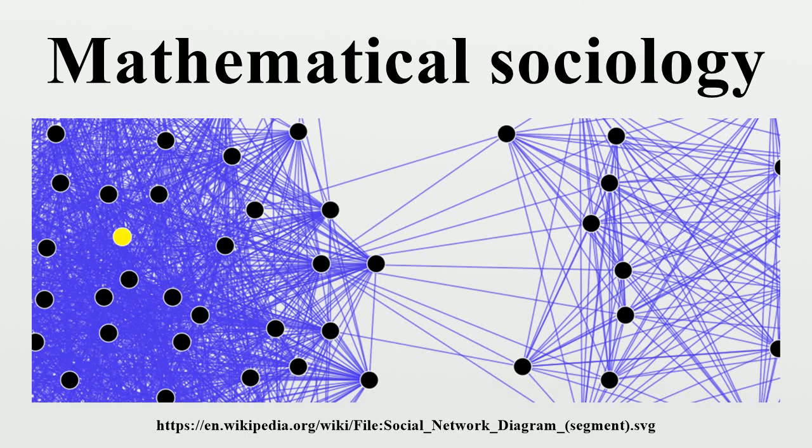Mathematical sociology is the use of mathematics to construct social theories. Mathematical sociology aims to take sociological theory, which is strong in intuitive content but weak from a formal point of view, and to express it in formal terms.